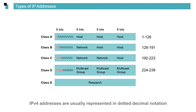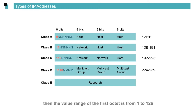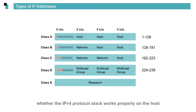IPv4 addresses are usually represented in dotted decimal notation, consisting of four octets separated by dots. If the highest order bit of the first octet in an IPv4 address is set to 0 and the remaining bits are not set, then the value range of the first octet is from 1 to 126. 127 is used for local loopback testing. For example, when the computer pings 127.0.0.1, the computer is pinging itself to check whether the IPv4 protocol stack works properly on the host.